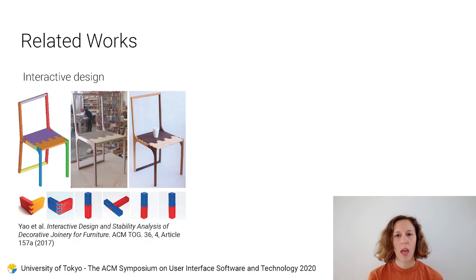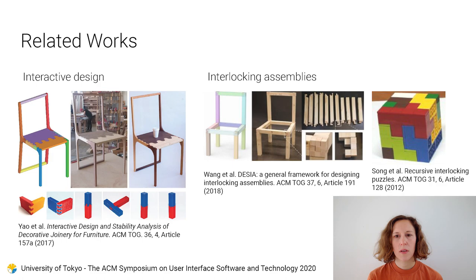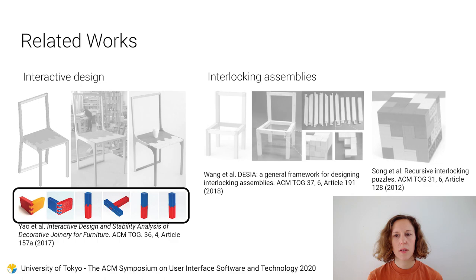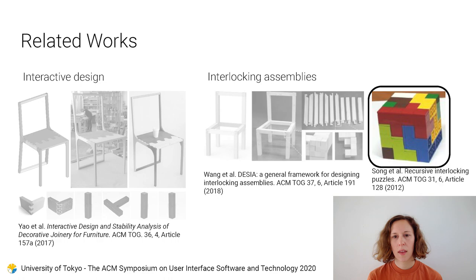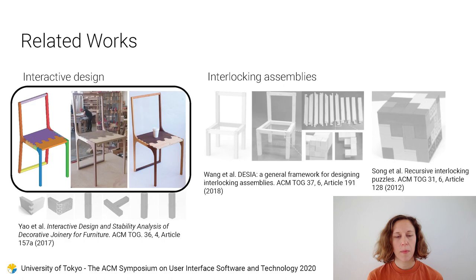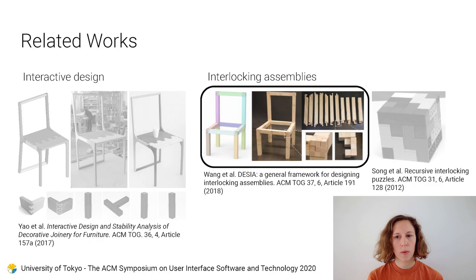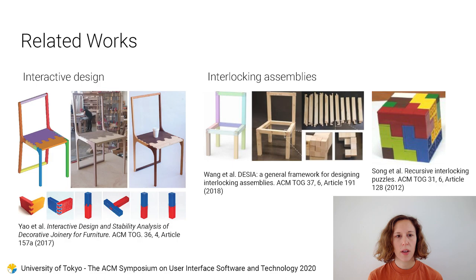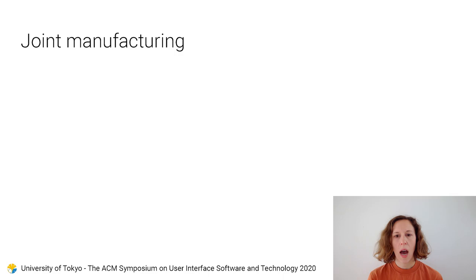One related work tackles this problem with an interface where the user designs a joint by drawing free-form exterior curves. Other works automatically generate joints with interlocking properties. These works share one common limitation: materialized results are typically 3D printed or built with Lego. When made from wood, they are handcrafted by professional woodworkers or produced by gluing cubes of wood together. Practical criteria for fabrication with wood are not considered.